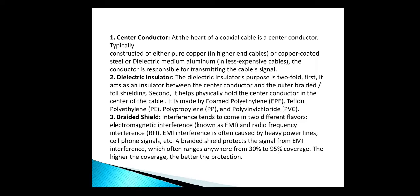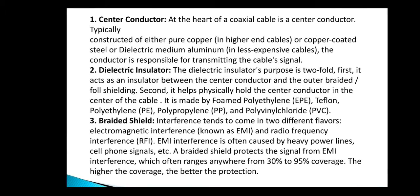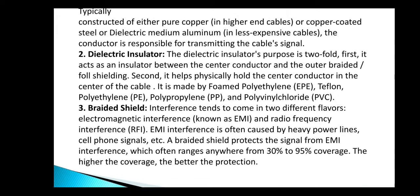Braided shield. Interference tends to come in two different flavors: electromagnetic interference (EMI) and radio frequency interference (RFI). Electromagnetic interference is often caused by heavy power lines, cell phone signals, etc. A braided shield protects the signal from EMI interference, which often ranges from 30% to 94% coverage. The higher the coverage, the better the protection.